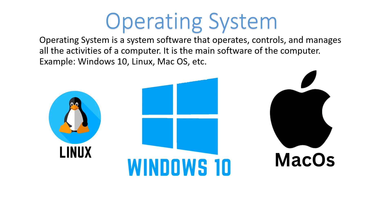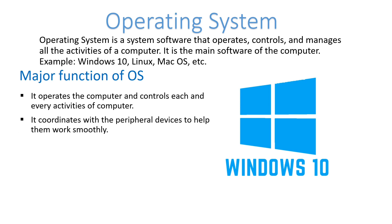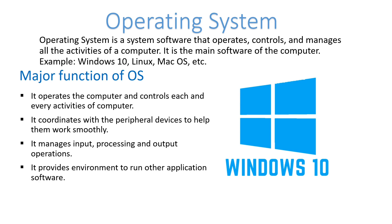The major functions of the operating system are: it operates the computer and controls each and every activity of the computer system. It coordinates with the peripheral devices — such as the keyboard, mouse, monitor, and printer — to help them work smoothly. It also manages the input, processing, and output operations of the computer system.